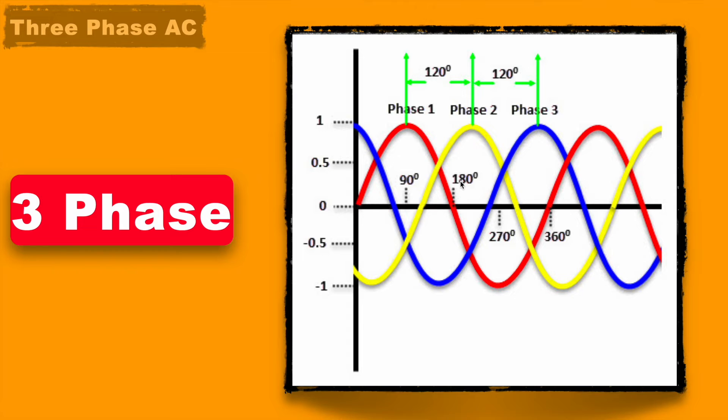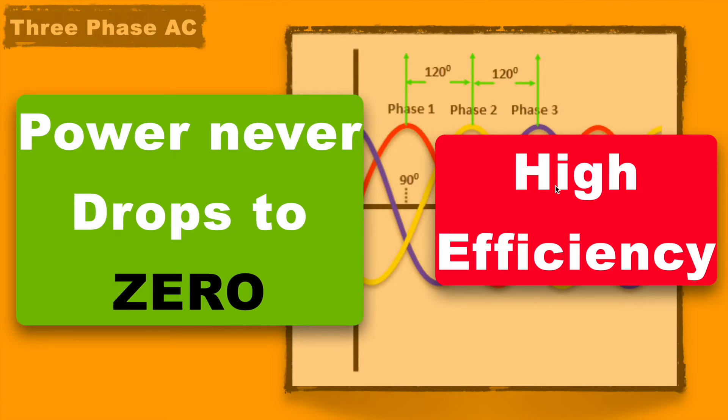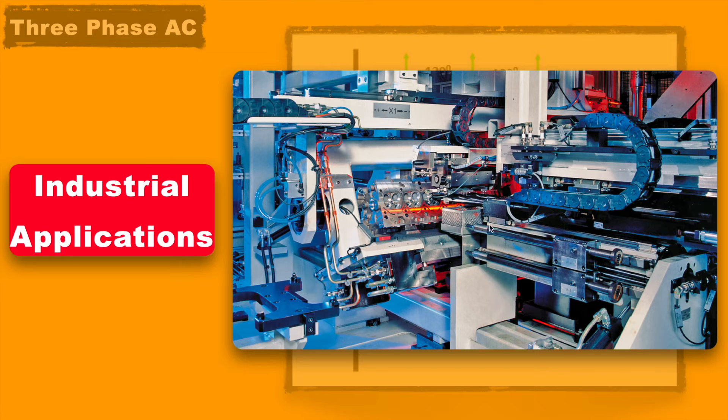If you notice here, at any point of time this voltage never becomes zero. So in case of 3 phase power supply, power never drops to zero and it provides very high efficiency. This is the reason it is used for industrial applications where very high power efficiency is required.